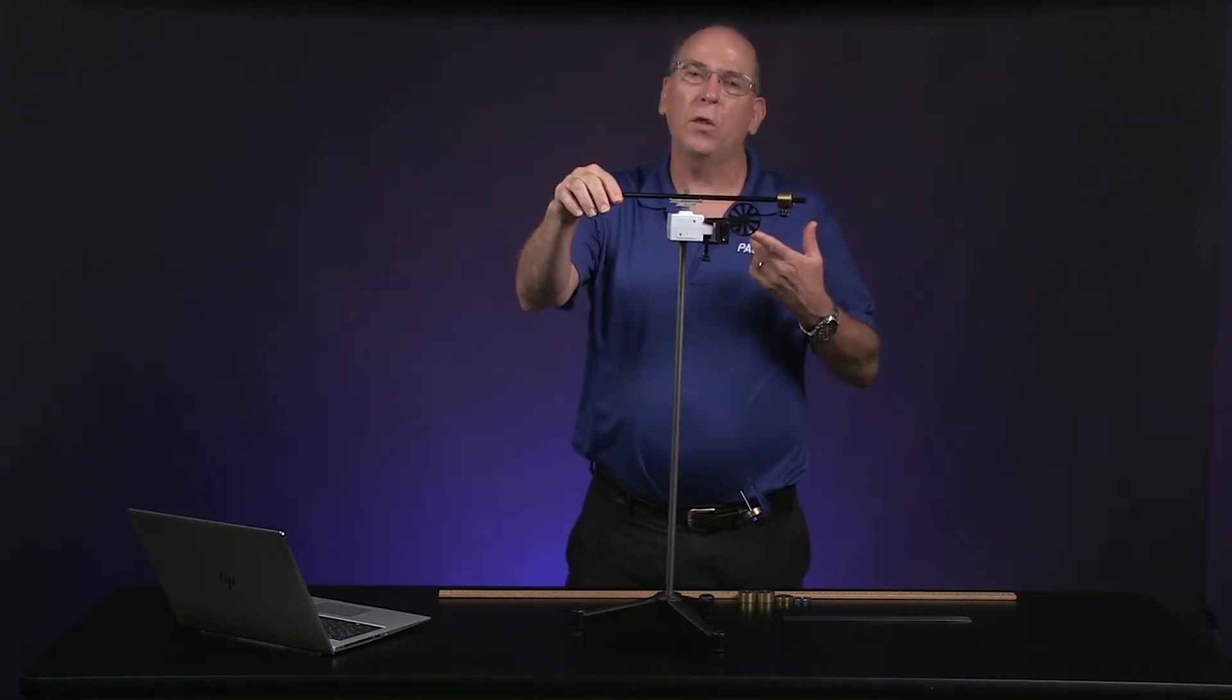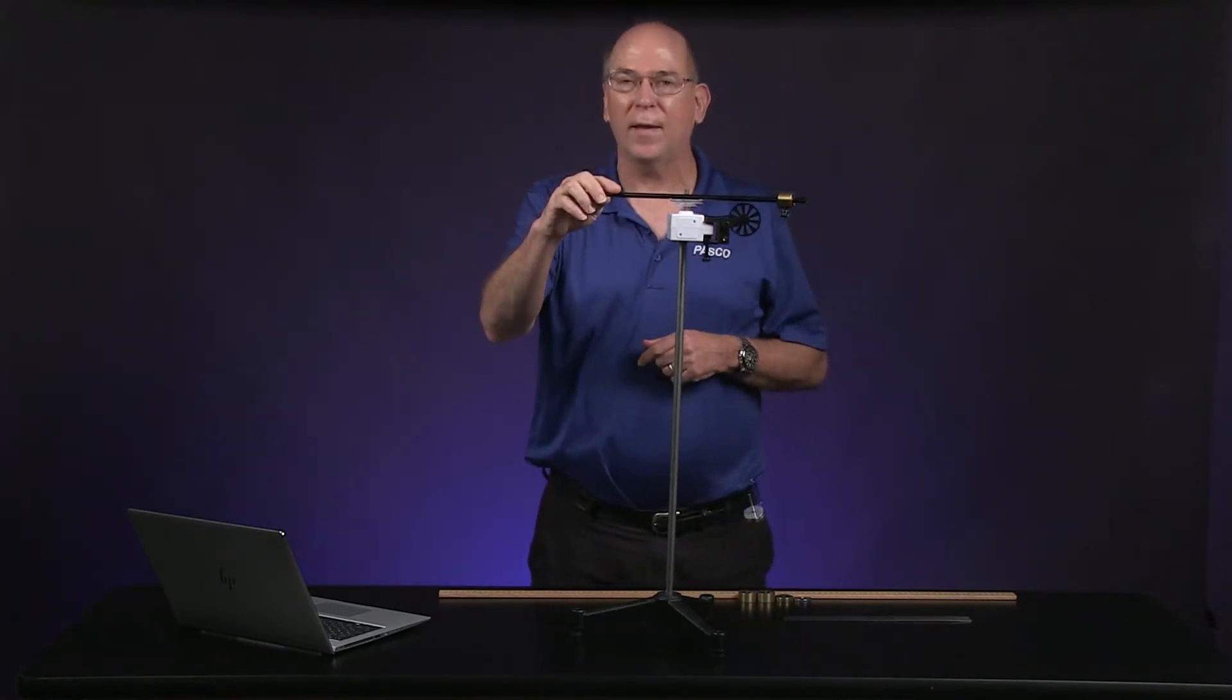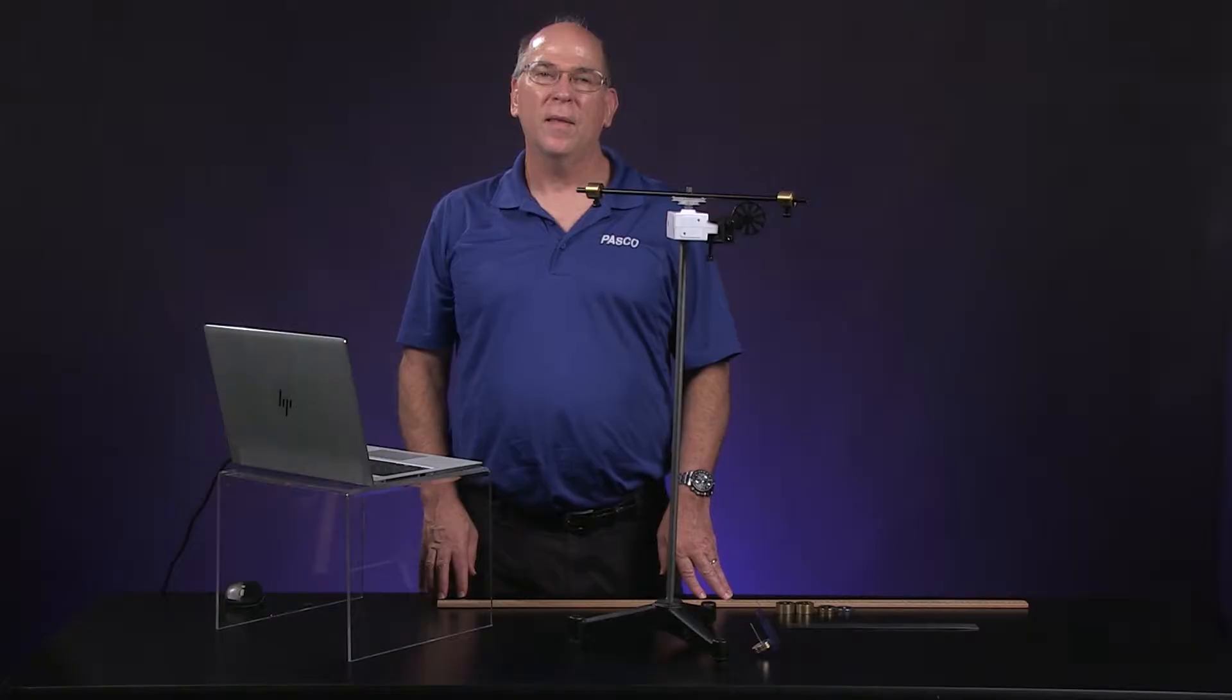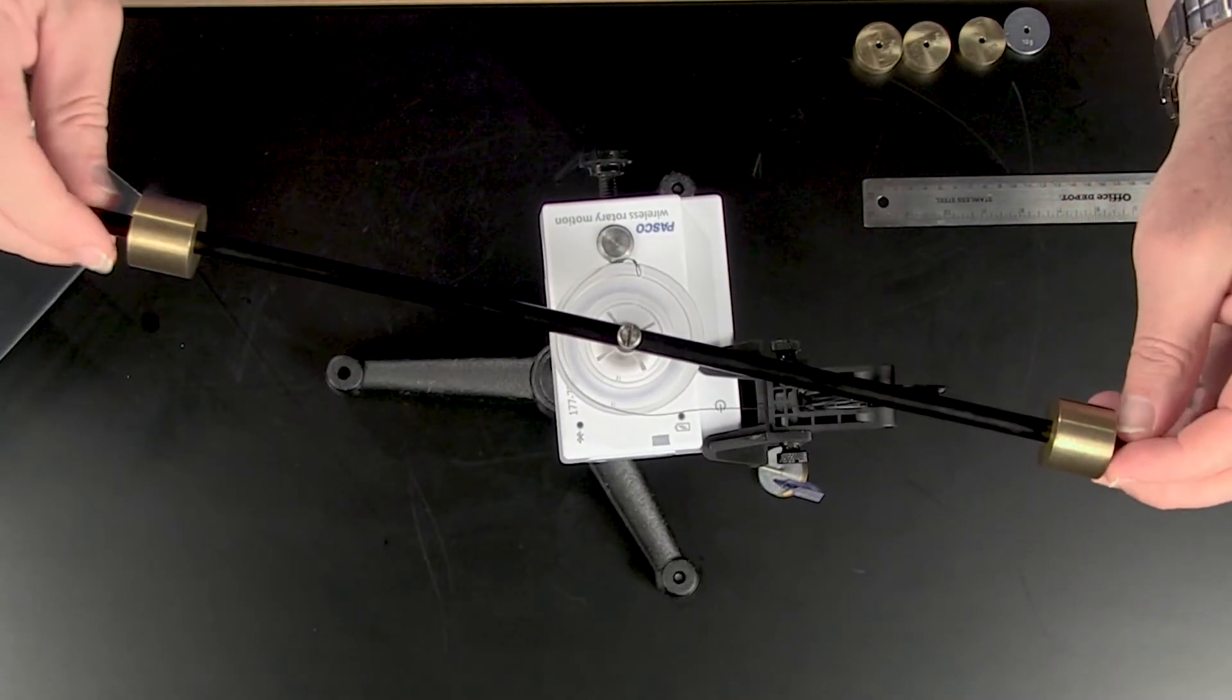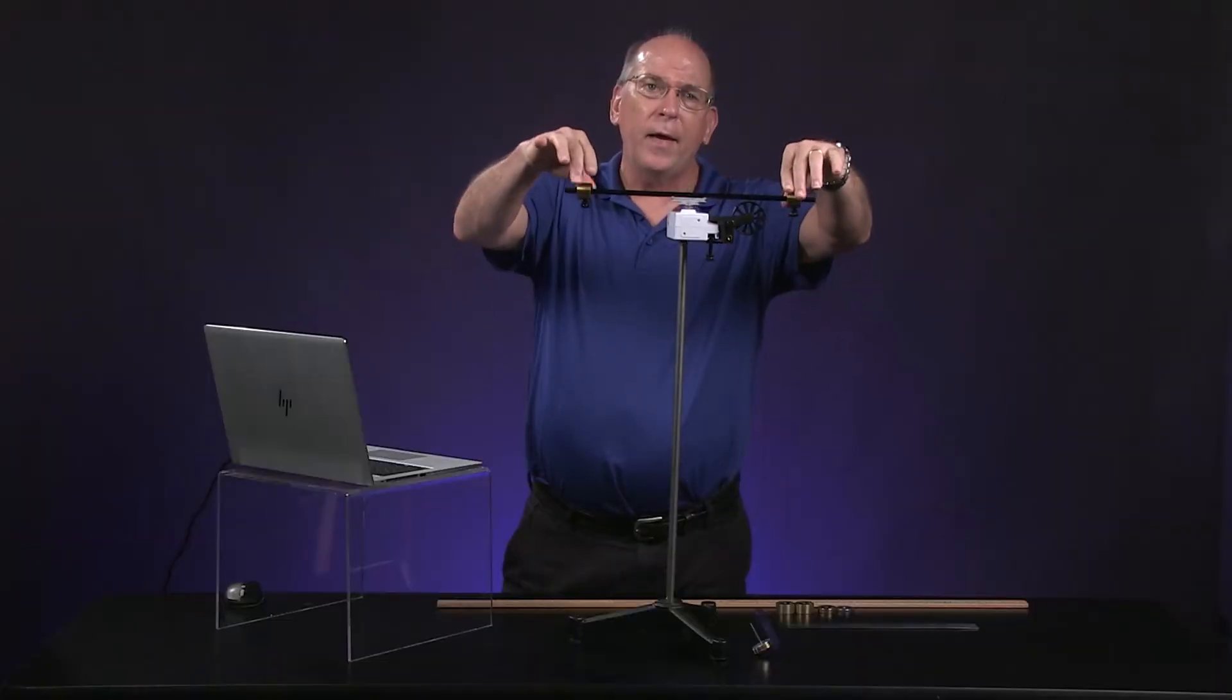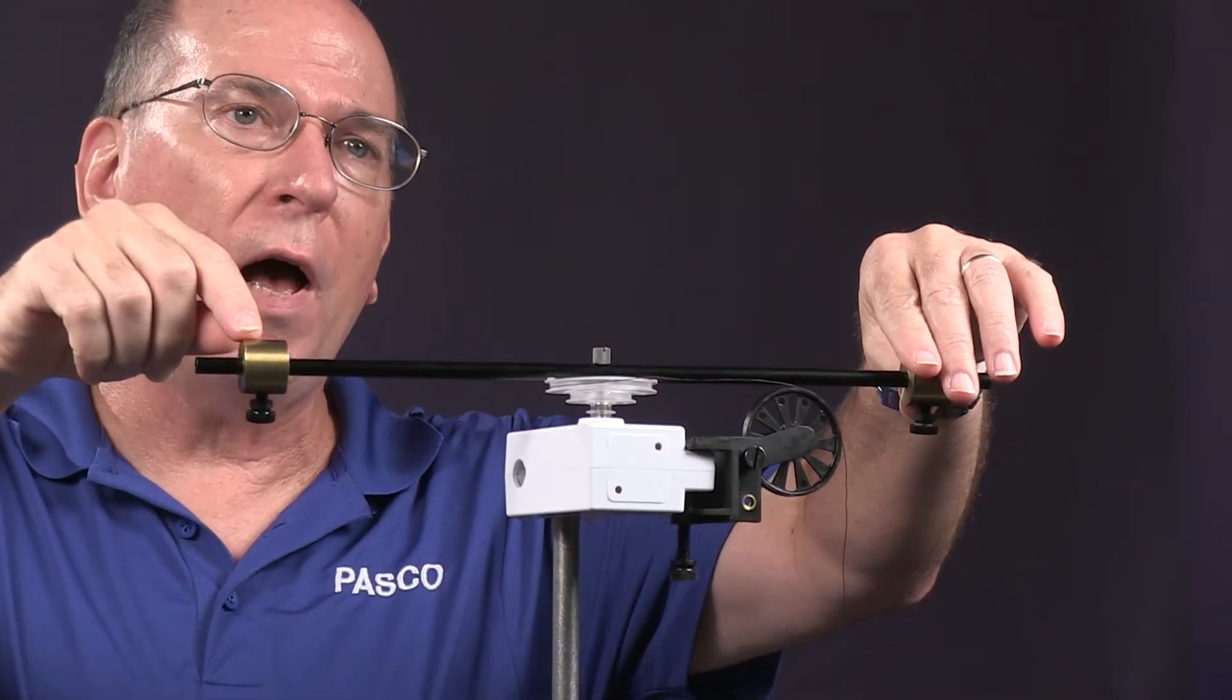We will vary the torque for each trial by changing the mass attached to the end of the string. We need to know the masses and dimensions of the parts of our rotating apparatus. There is a place in the lab right above the data table for you to write these down. The rotating arm has a mass of 0.027 kilograms.